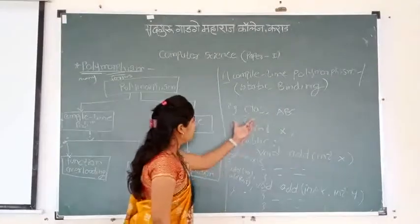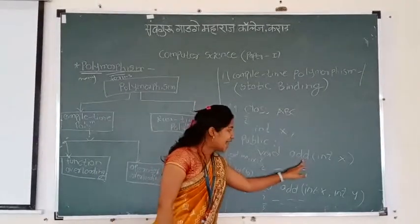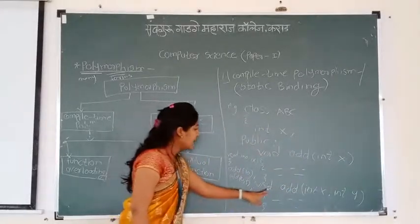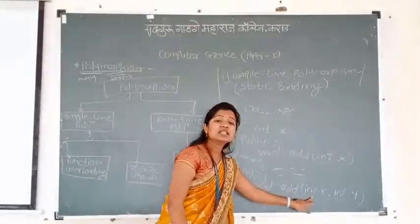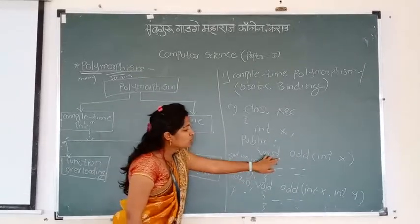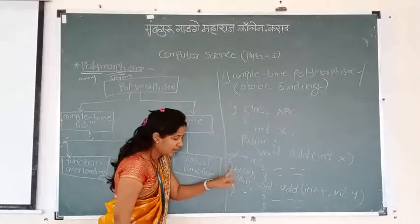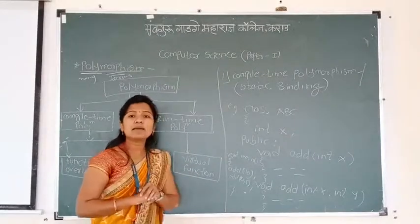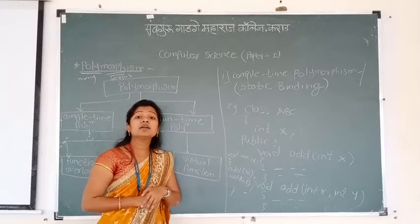I have written a simple program: class abc, with one variable x. The first member function is void add with one argument int x, and the second has the same name void add but with two arguments. In void main, I called the member function — first add with value 10, and second add with values 4 and 5.